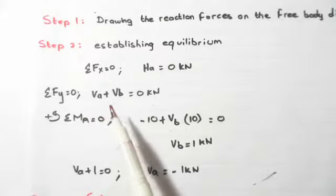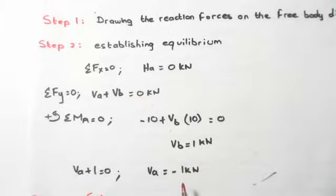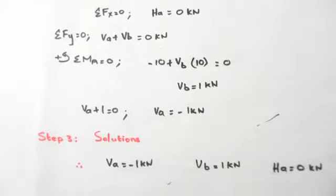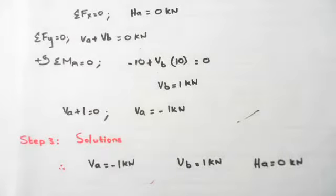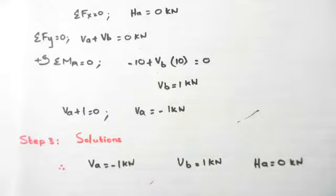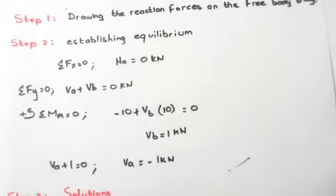Since Va plus Vb equals zero and Vb equals 1 kilonewton, Va equals minus 1 kilonewton. Writing in the solutions: Va is minus 1 kN, Vb is 1 kN — minus one plus one gives zero, confirming equilibrium. Ha equals zero, and we have full equilibrium for the structure.